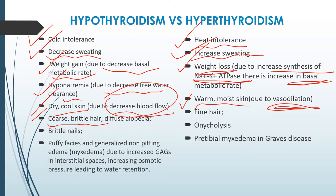Regarding hair, we see coarse, brittle hair and diffuse alopecia in the case of hypothyroidism, whereas fine hair is seen in hyperthyroidism. Nails in hypothyroidism are brittle, whereas in hyperthyroidism, the nail suffers from onycholysis.